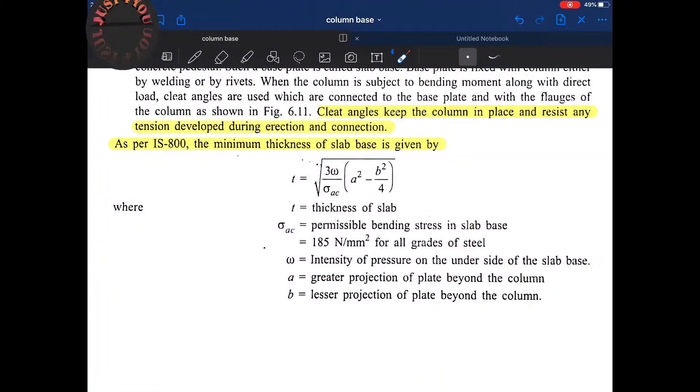Where t is the thickness of slab, sigma is the permissible bending stress in slab base, that is 185 Newton per mm squared. Omega is the intensity of pressure on the underside of the slab base.